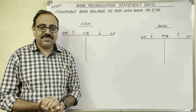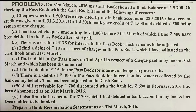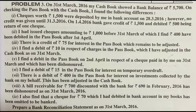Let us see the question first. On 31st March 2016, my cashbook showed a bank balance of 5700 rupees. On checking the passbook with the cashbook, I found the following differences. First, cheques worth 1500 rupees were deposited by me in the bank account on 28th March 2016. However, no credit was given until 31st March 2016. On 1st April 2016, the bank gave credit of 1500 rupees and debited 500 being written off one cheque. Second, I had issued cheques amounting to 1000 rupees before 31st March, of which 400 rupees have been debited in the passbook after 1st April.